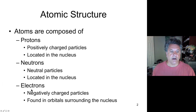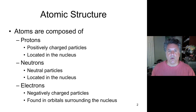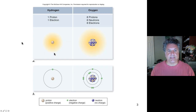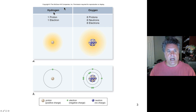Even though electrons have significantly less mass than a proton, they have an equal negative charge that exactly balances the positive charge of a proton. Let's look at some simple representations of atoms. Take the hydrogen atom, which is the simplest atom and composes most of the mass of the universe. Hydrogen has one proton and one electron, and it does not have a neutron.